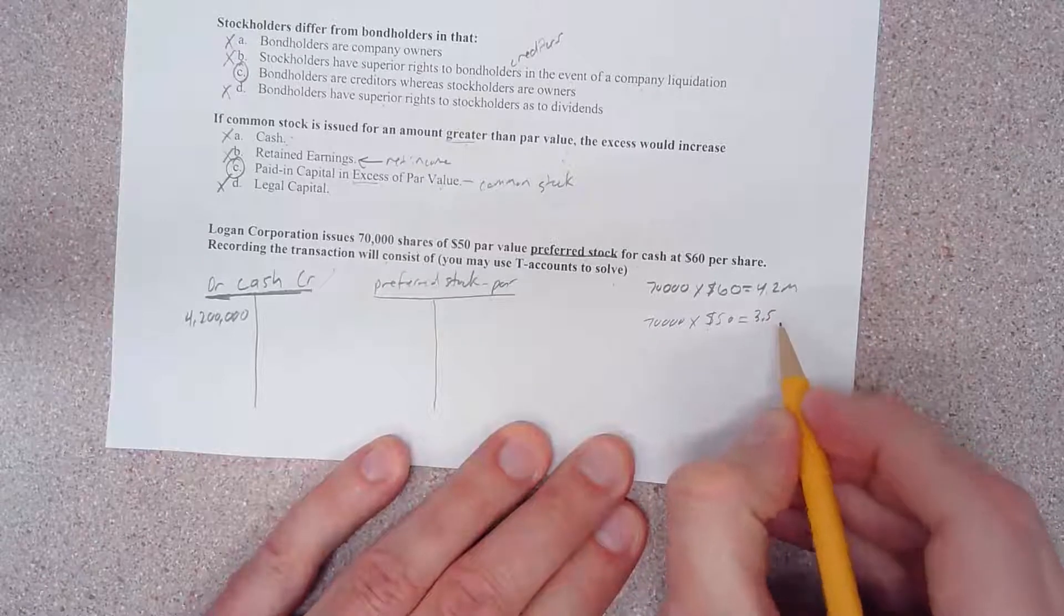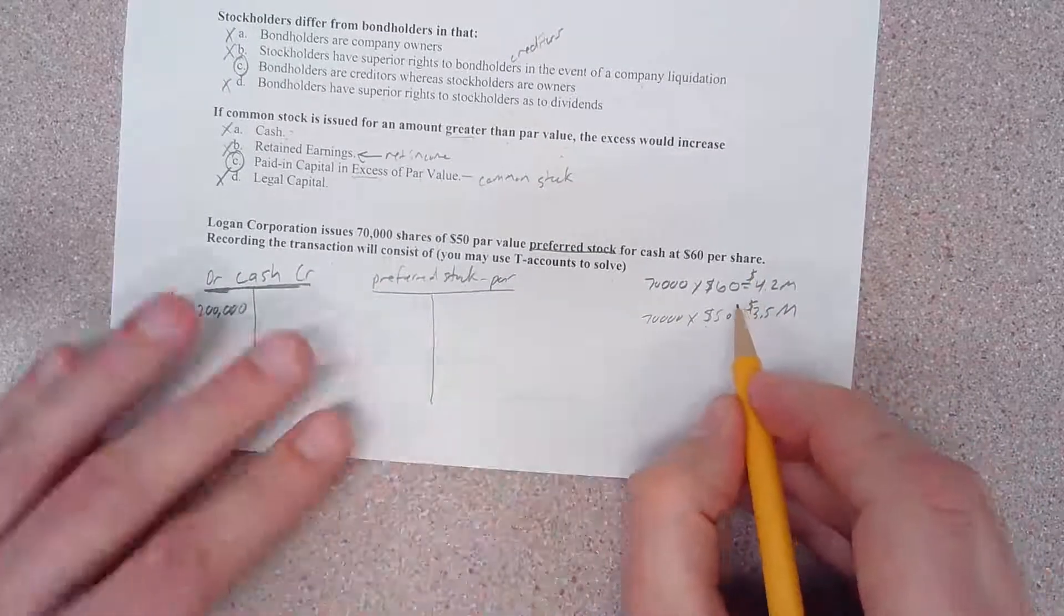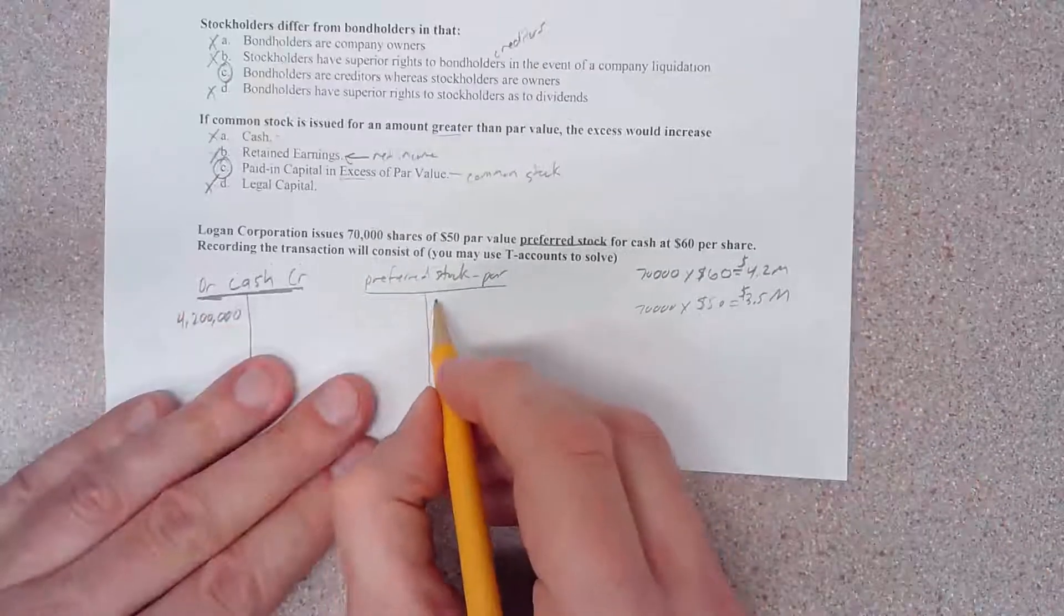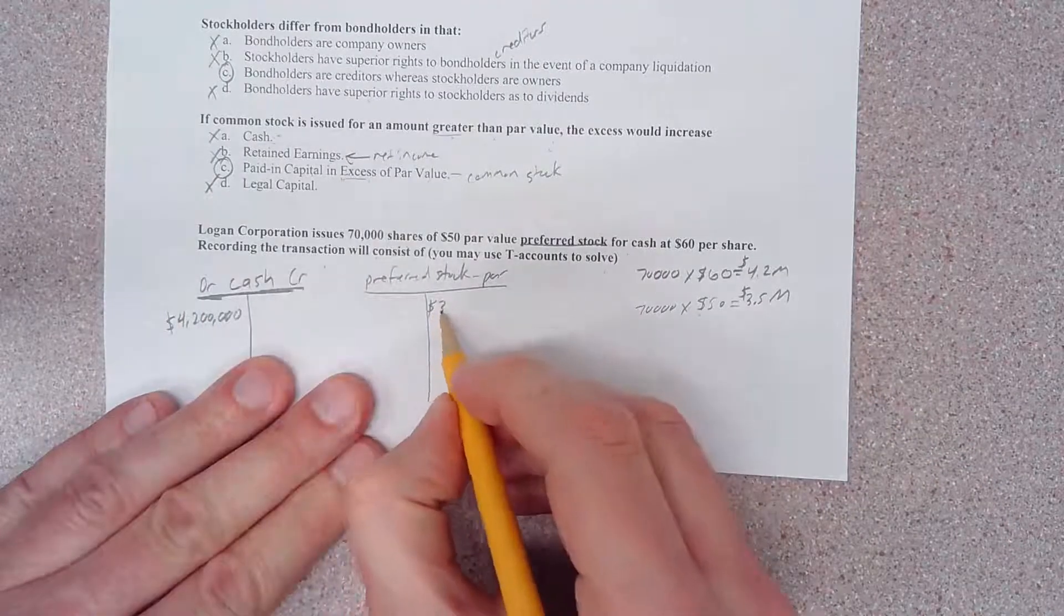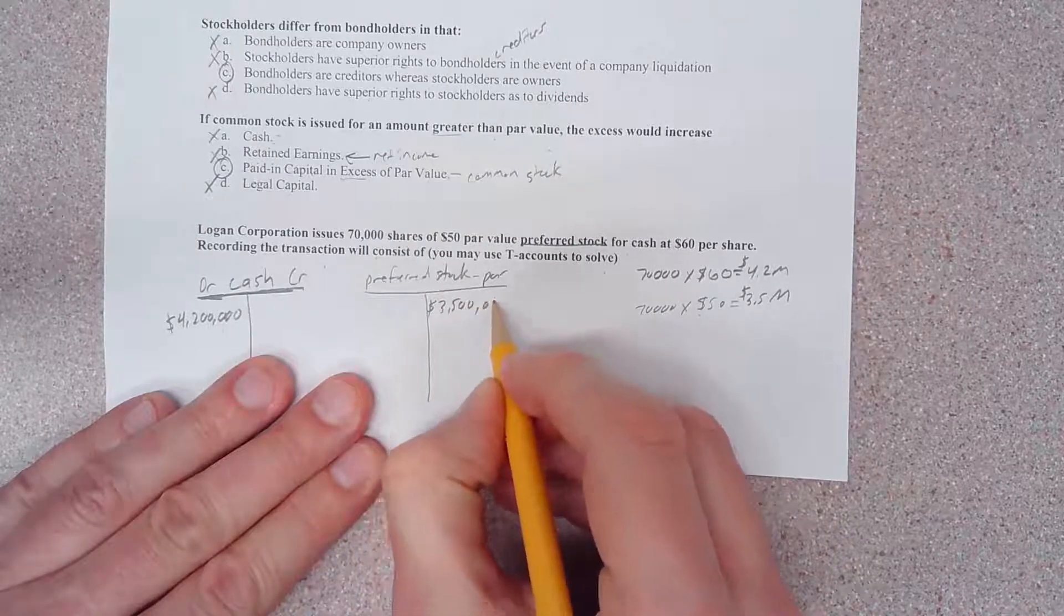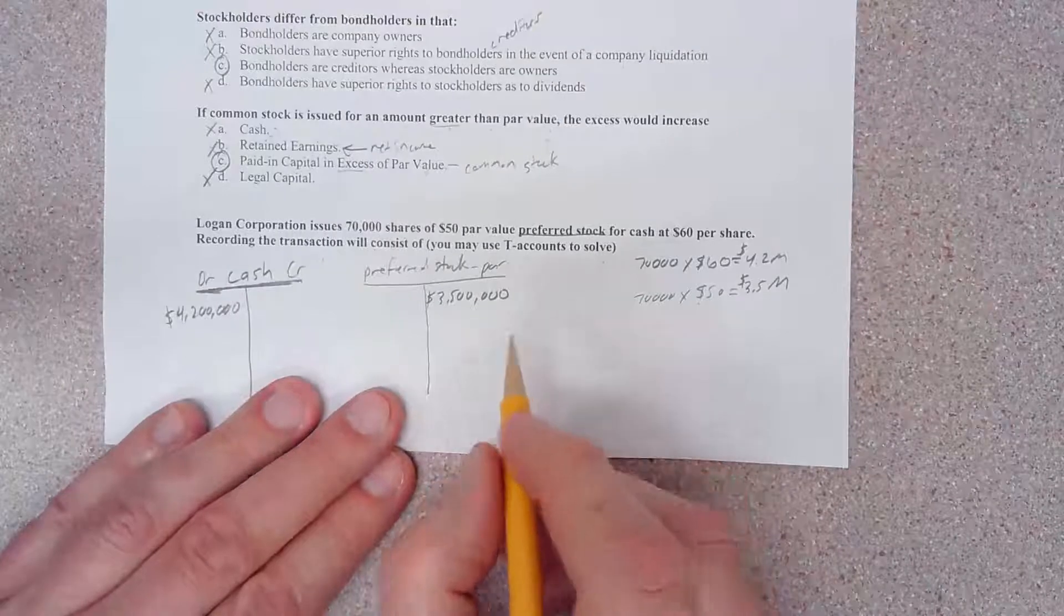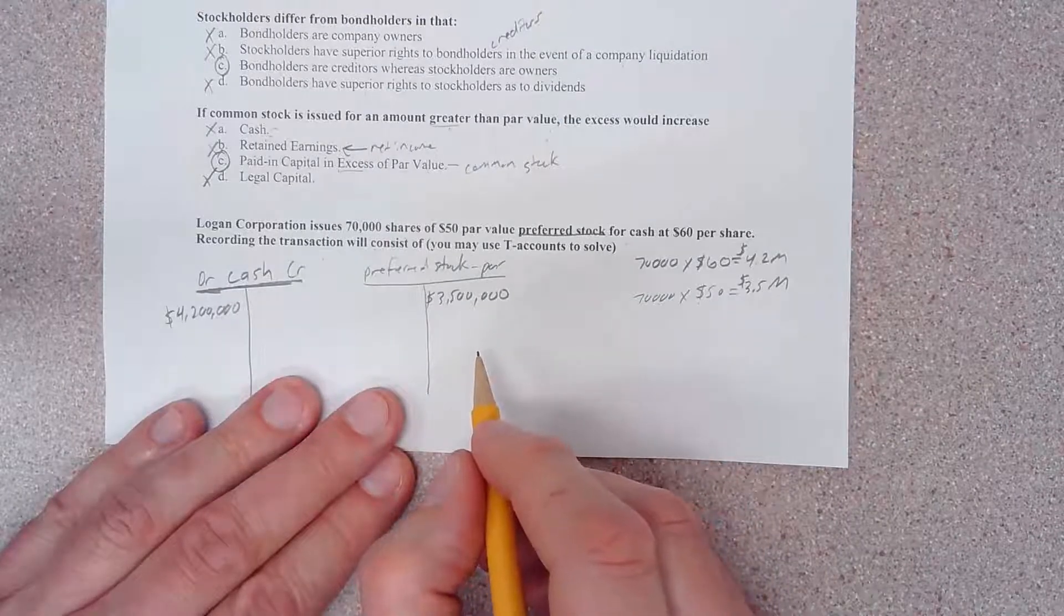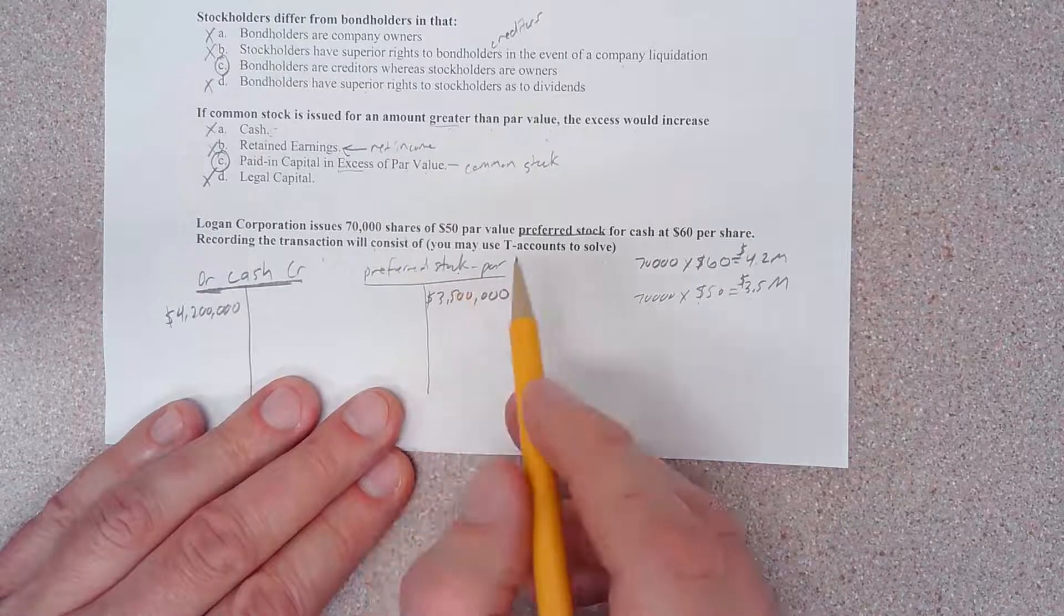But we're going to multiply it by only the par value, and if we do that, we're going to come up with $3.5 million. We're going to plot that on the right side of our T-account.